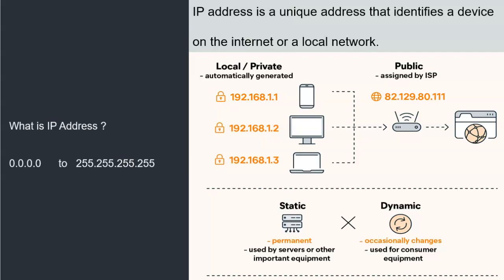We have a lot of gadgets we use in day-to-day life and every gadget has its own IP address. For example, every house has a router which helps provide internet connectivity to all connected devices. When the ISP — Internet Service Provider — provides internet to the router, it gives us a particular number which is the IP address. That is a public IP address because it is connected to the internet. The router then provides local IP addresses to the gadgets connected to it, so it can identify which devices are connected and easily provide internet to those devices.